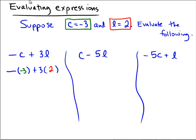Looks like negative of negative 3. So the negative of negative 3 would be positive 3 plus 3 times 2 which is 6, and 3 plus 6 is 9.